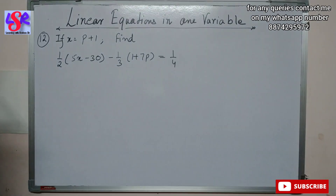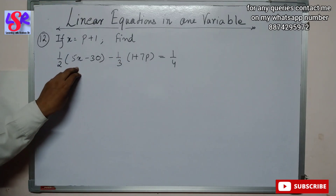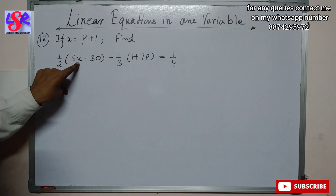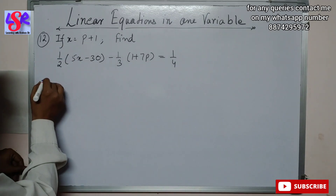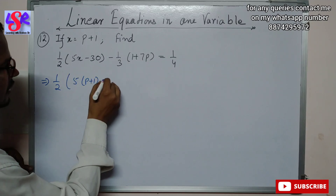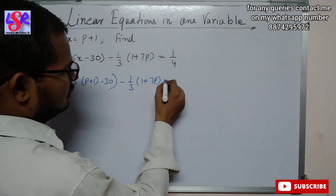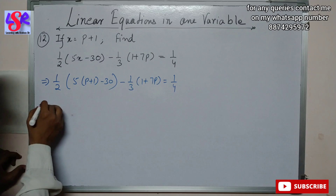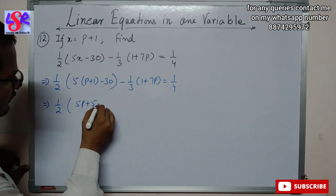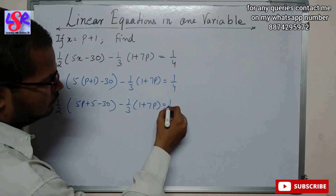Now moving to question number 12. We are given x = p + 1 and we have to find p in the expression (1/2)(5x - 30) - (1/3)(1 + 7p) = 1/4. Substituting x = p + 1: (1/2)(5(p + 1) - 30) - (1/3)(1 + 7p) = 1/4. Opening brackets: (1/2)(5p + 5 - 30) - (1/3)(1 + 7p) = 1/4.